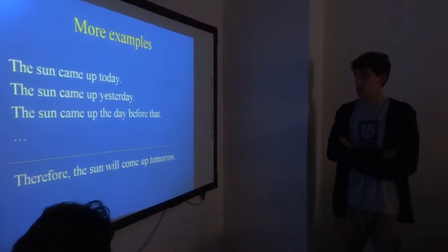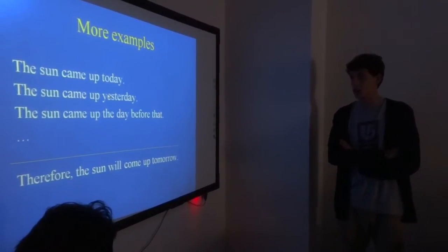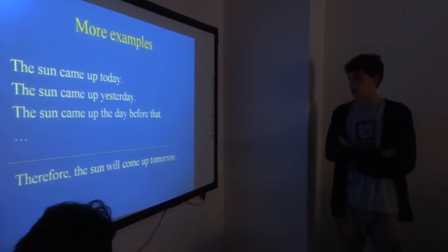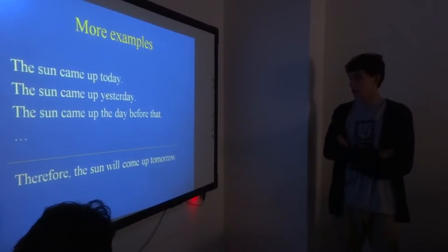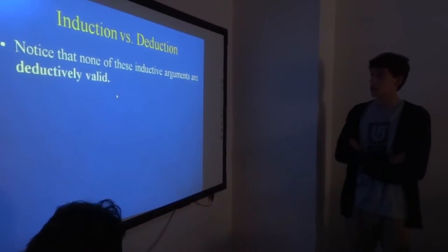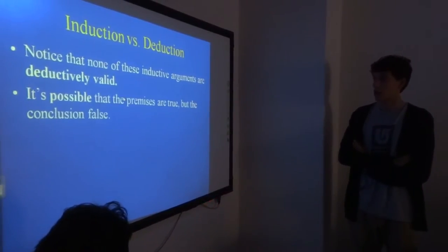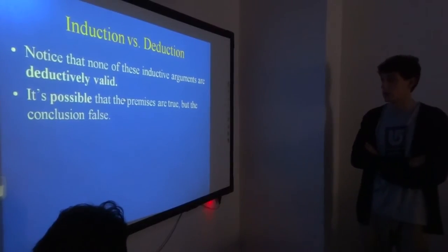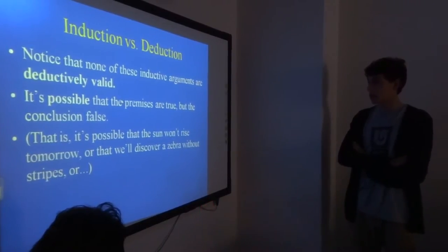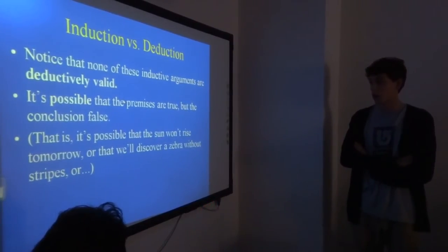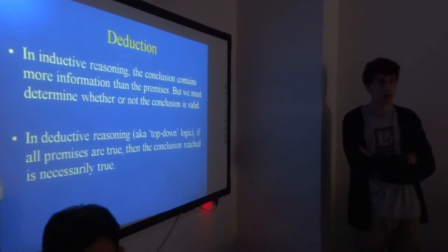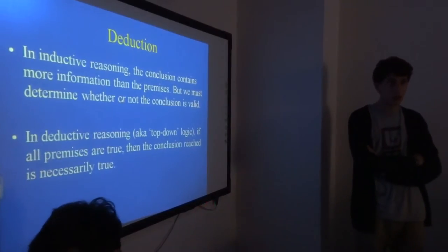More examples: the sun came up today, the sun came up yesterday, the sun came up the day before that, therefore the sun will come up tomorrow. Induction. Notice that none of these inductive arguments are deductively valid. It's possible that the premises are true but the conclusion false. It's possible that the sun won't rise tomorrow or that we'll discover a zebra without stripes.